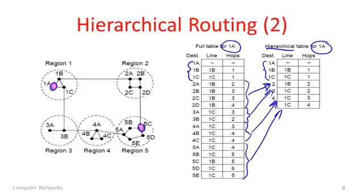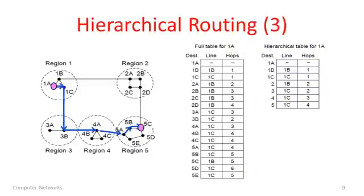Here we have a packet trying to go from 1A to 5C — I've colored in those nodes so you can see them on the graph. At 1A, we look up the decision for 5C. Since this is a hierarchical table, there's no entry for 5C in particular — there's just a blanket entry for region 5. It says to get to region 5, go via 1C, and it's going to be 4 hops. You can see the path we took to get from 1A to 5C, and we could perform the same exercise for different paths through this network.